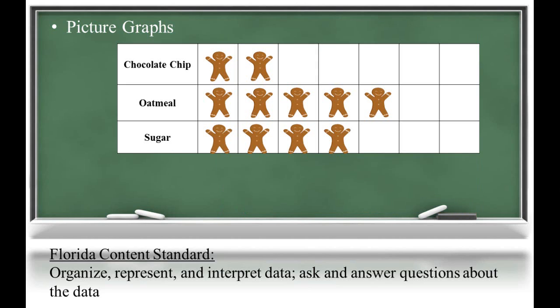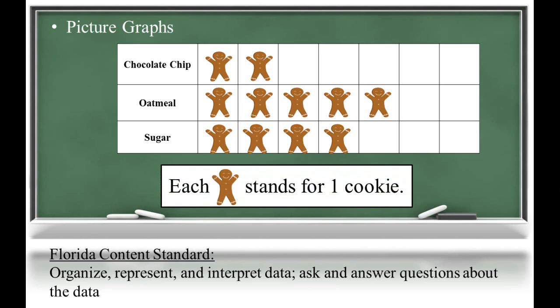As students become more proficient with picture graphs, they will begin to use a single symbol to represent the data in all categories. A key will explain what the symbol means. In first grade, each symbol will only stand for one item or one vote. In second grade, however, students will begin to record symbols that represent more than one. For instance, each gingerbread could stand for five cookies.